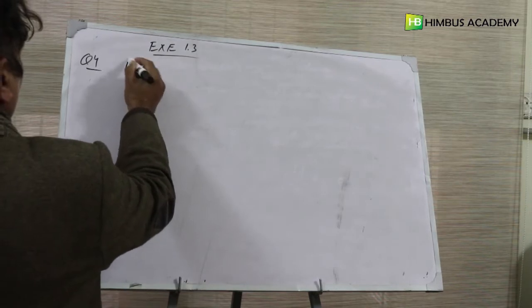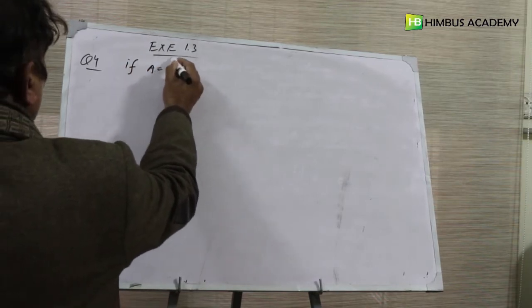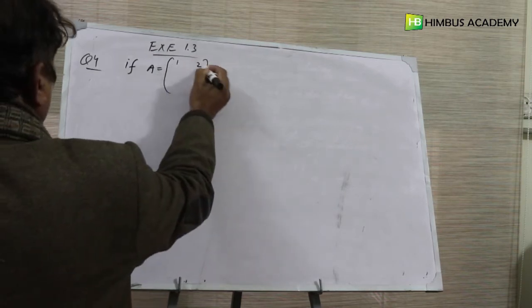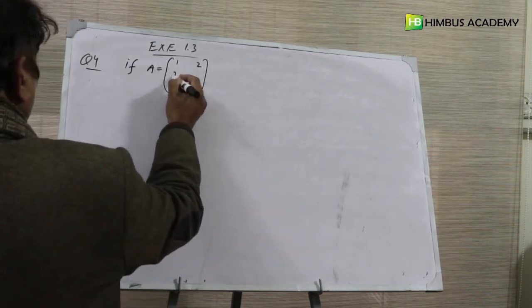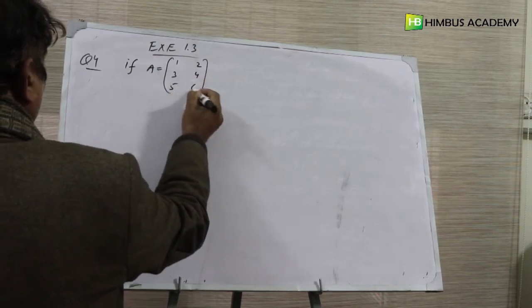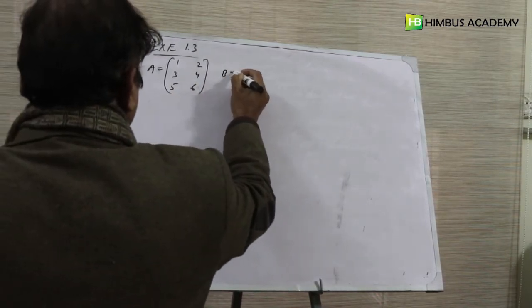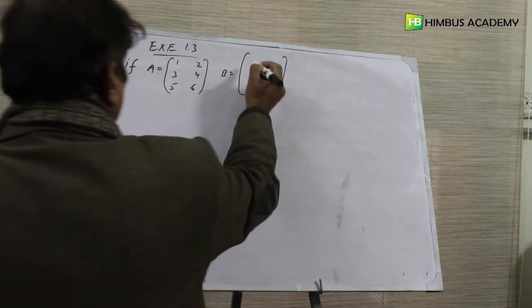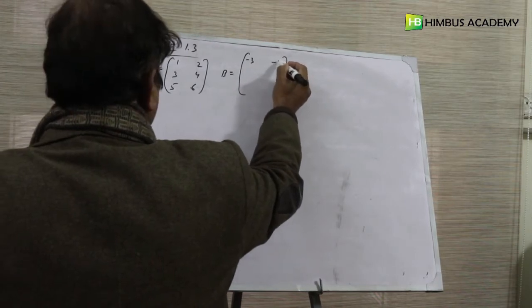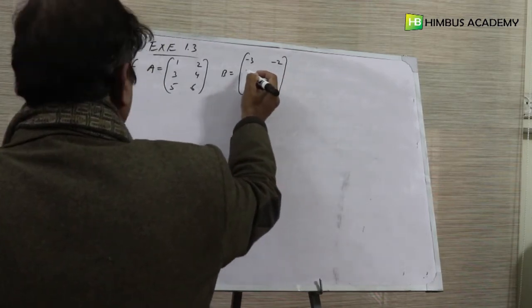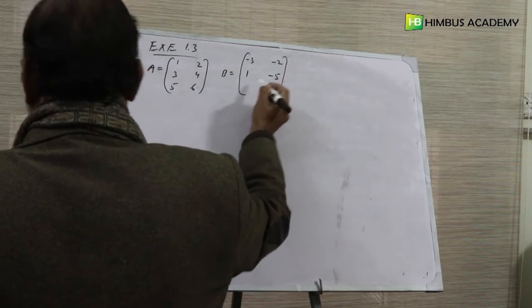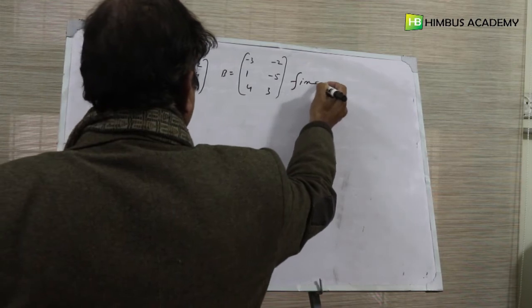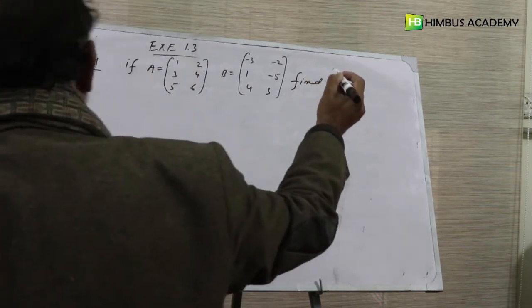If matrix A is equal to 1, 2, 3, 4, 5, 6, and B is equal to minus 3, minus 2, 1, minus 5, 4, 3, find 3A minus B.